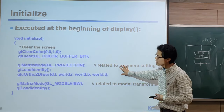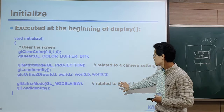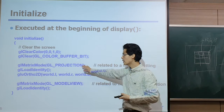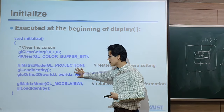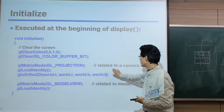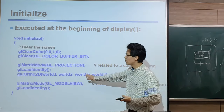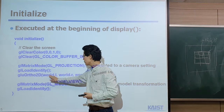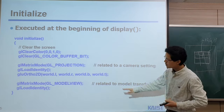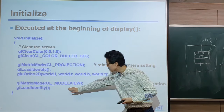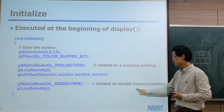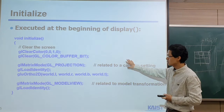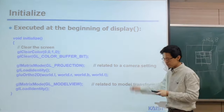You don't need to know the details right now, but at a high level: the matrix mode, GLU projection, and so on are related to camera settings. We have the projection which we talked about before for camera setup, and another one is the model view, which is related to model transformation. We'll explain this more later on.